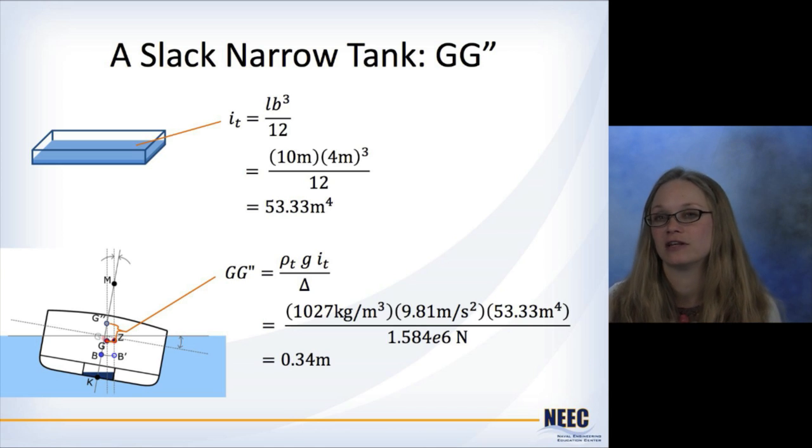So now the moment of inertia is only 53 meters to the fourth. So plug all that in, and now the free surface correction is only 0.34 meters. So this would indicate that maybe narrower tanks are better to have in terms of minimizing the effect on stability of these slack tanks.